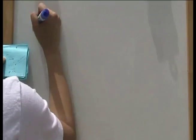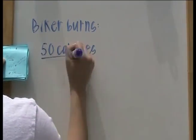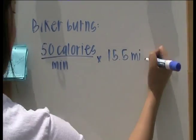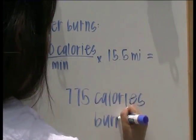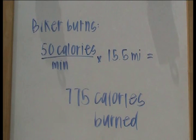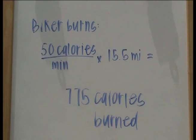If the biker burns about 50 calories per mile and travels a total of 15.5 miles, she burns a total of 775 calories.